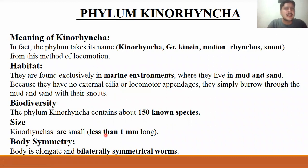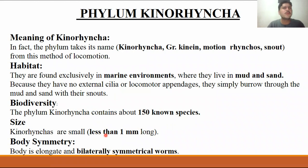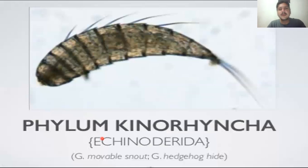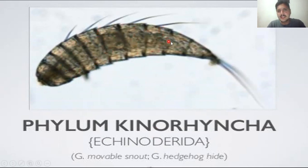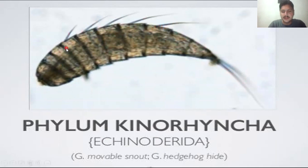They are less than one millimeter long. However, fossils found from the Cambrian period show that larger forms of Kinorhyncha existed, around 4 centimeters in size. There is a presence of segments in the body. The last body segment contains long spines, and most body segments also consist of different spines.